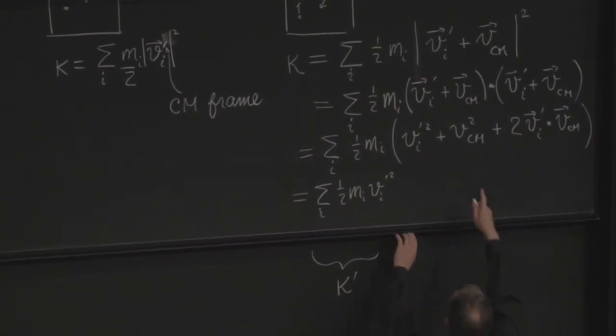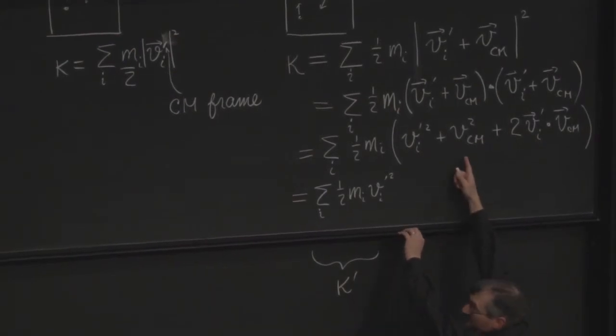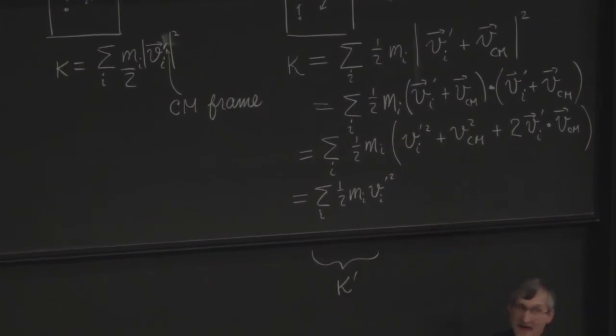What about this sum? Well, I can pull vcm squared out. It's a constant as far as the sum is concerned. So the sum just gives me sum of all the masses. So I get 1 half all the mass times v center of mass squared. That is the kinetic energy of a single mass point moving at vcm. It has all the mass of the system.